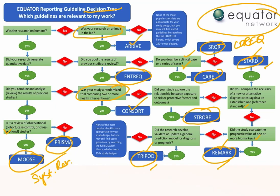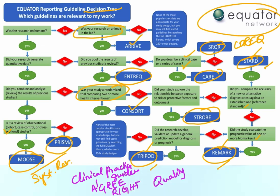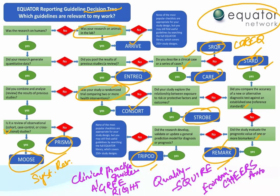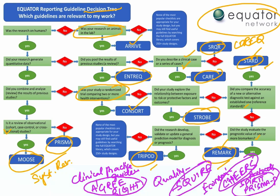There are certain guidelines missed in this decision tree. For clinical practice guidelines, we use the AGREE or RIGHT guidelines. For quality improvement studies, we use the SQUIRE guidelines. For economic evaluations, we use the CHEERS guidelines. For study protocols, we use the SPIRIT or PRISMA-P guidelines. These are the guidelines missed in the algorithm: clinical practice guidelines, quality improvement studies, economic evaluations, and study protocols.